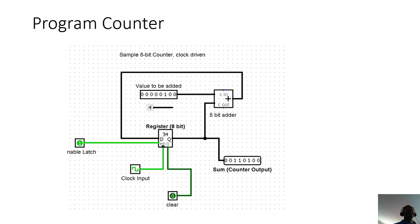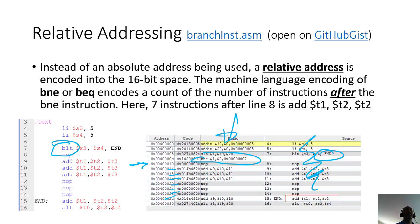Two things to think about: first, if there's a 7 encoded there, why not just use 7? And instead of going to the instruction right after the BNE, why are we going to the no-op versus the BNE's own address? That has to do with the hardware — we'll get a chance to look at how a program counter is implemented, but the short answer involves the clock cycle applied to every CPU as it clocks through memory.